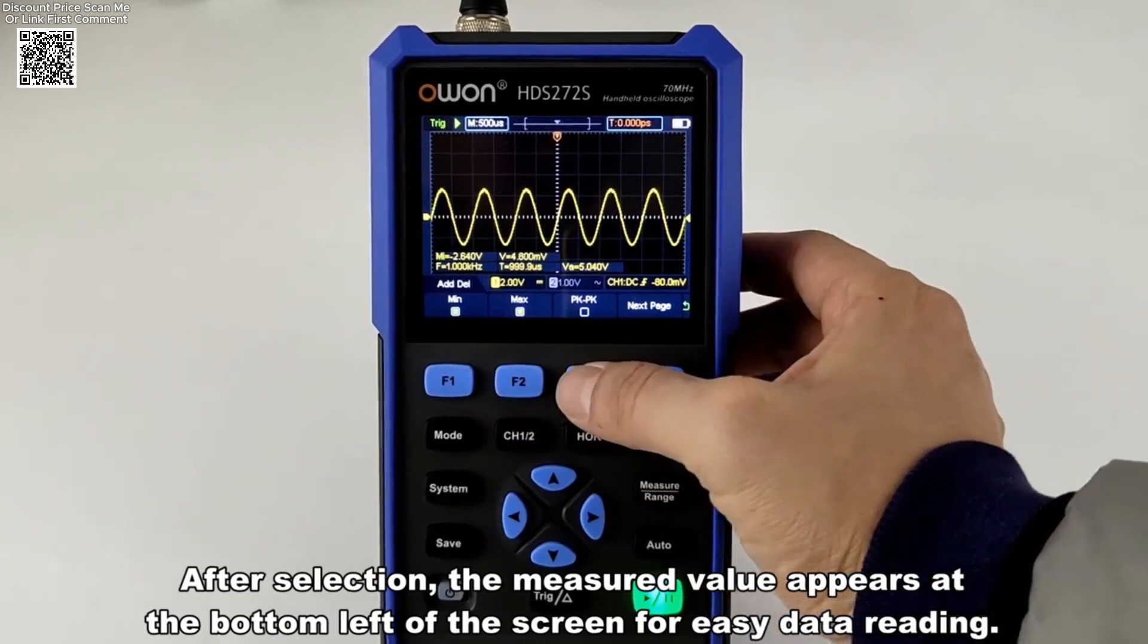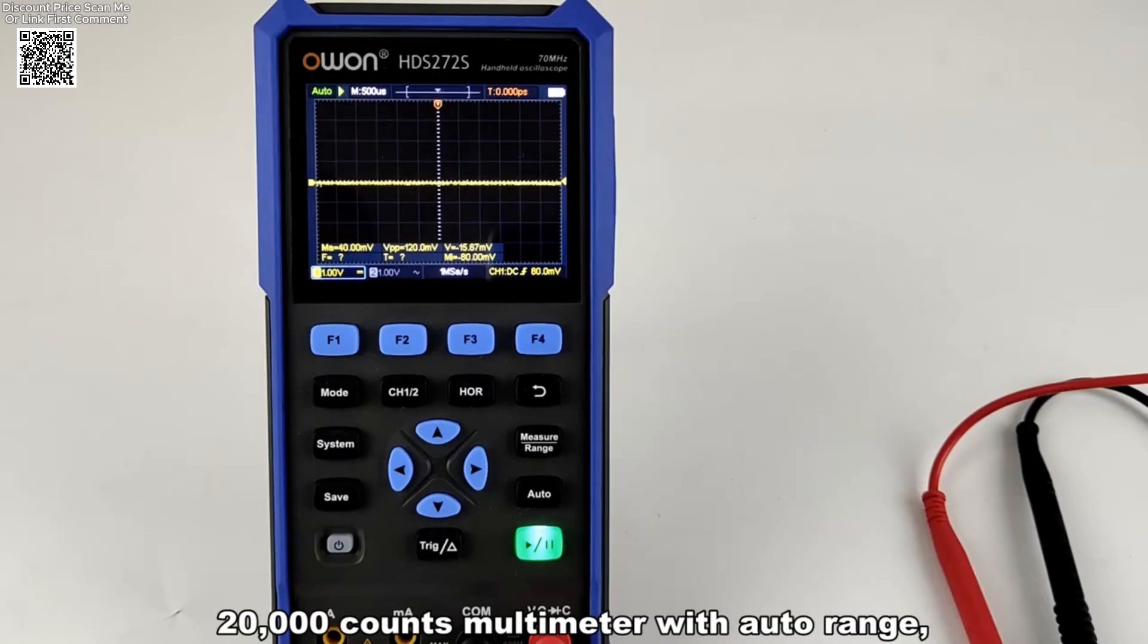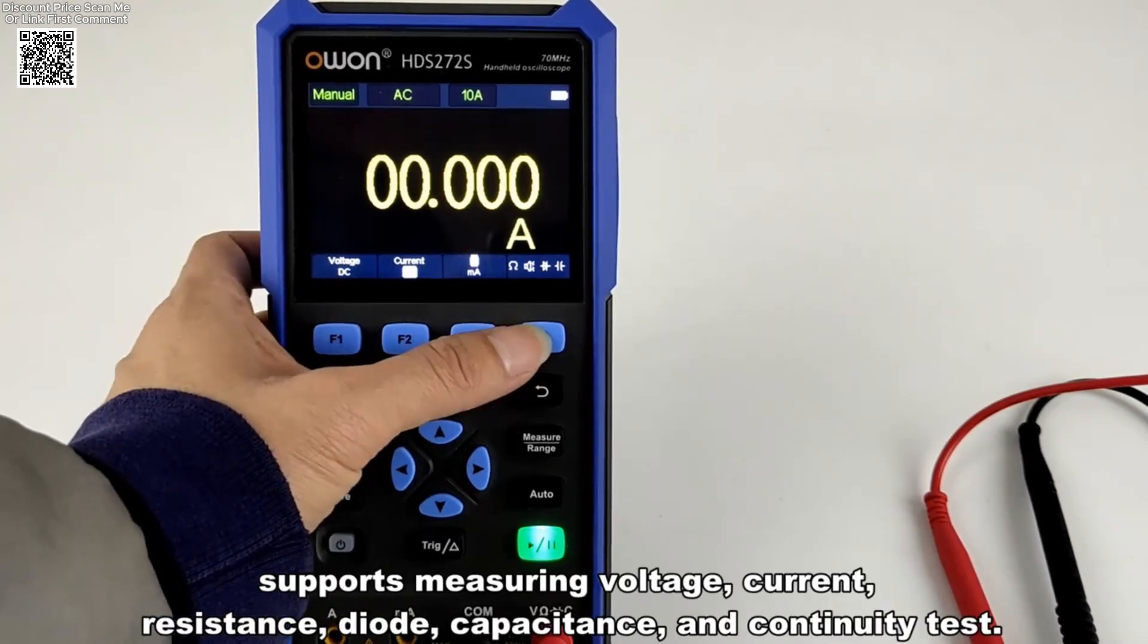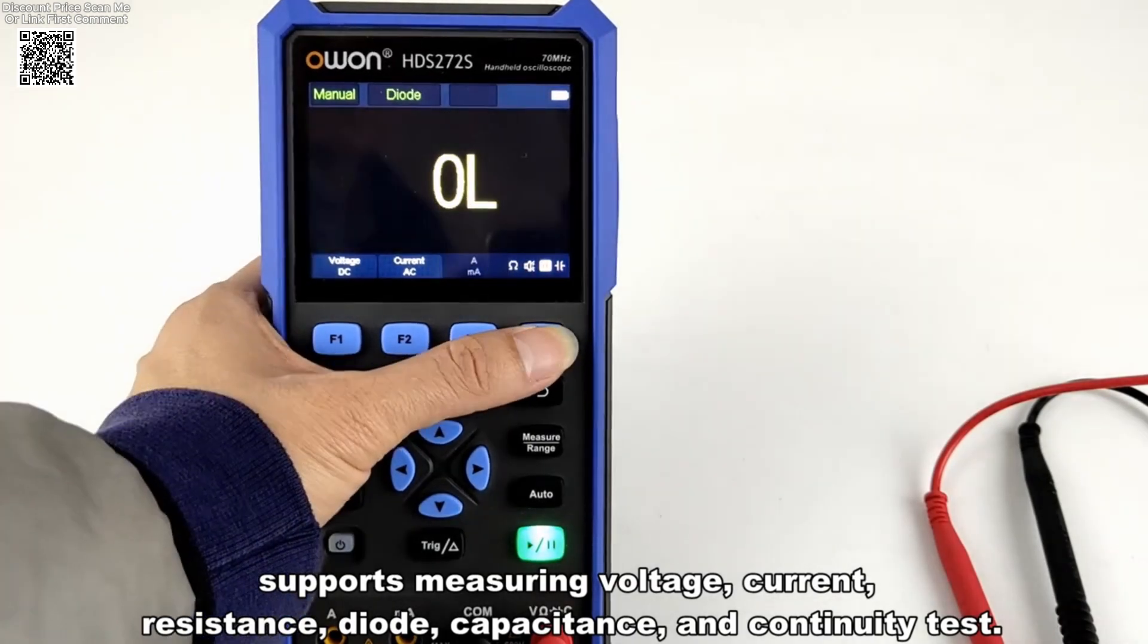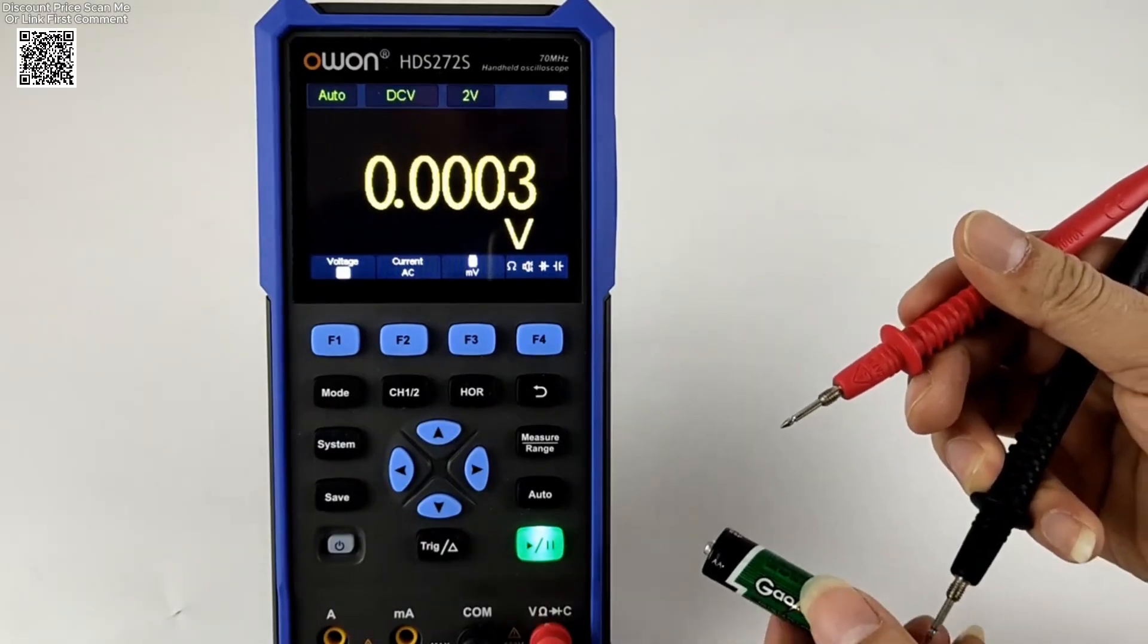It provides detailed signal analysis for a wide range of electrical applications. Whether you're testing circuits in a lab or troubleshooting on the go, the two digital channels allow you to view and compare signal behavior simultaneously, with a record length of 8K providing an excellent level of detail.